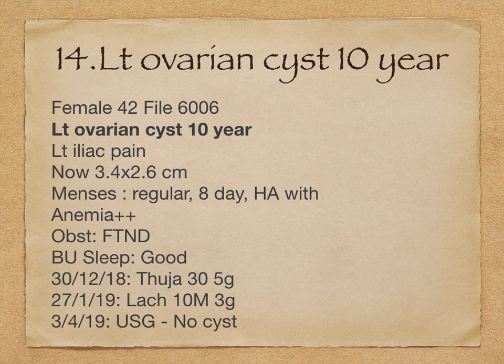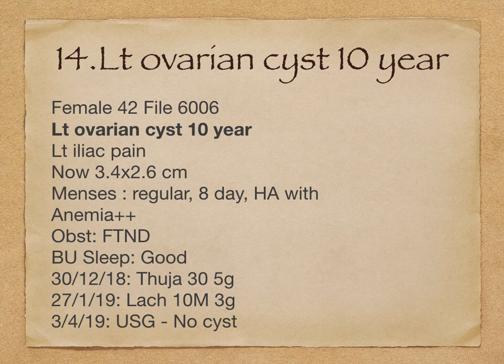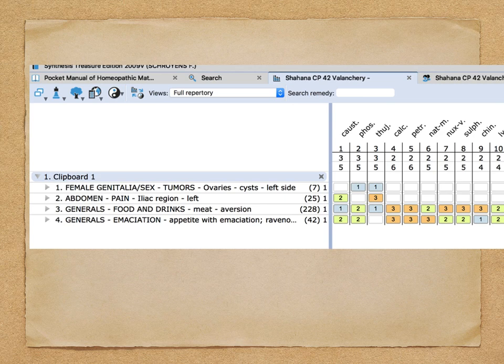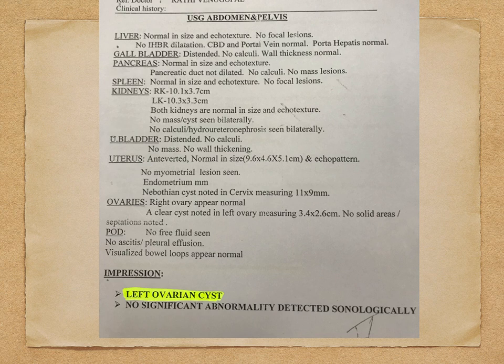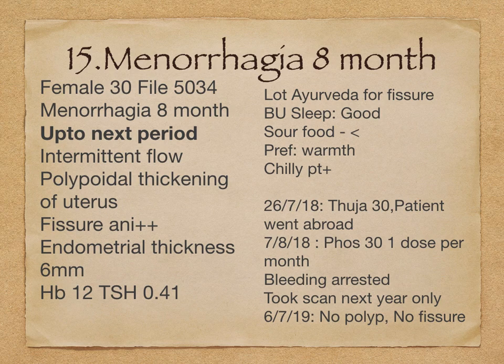Then a case of left ovarian cyst of 10 years duration — the age of the patient is 42. The patient has left iliac pain, the size is 3.4x2.6 cm, menses is regular, headache during menses, the patient is anemic also. We prescribed Thuja 30 initially, then followed by Lachesis 10M as the remedy. The rubrics taken: Tumor, ovarian, cyst, left side; Pain, iliac region, left; Generals, emaciation; Appetite, ravenous. The first scan showed left ovarian cyst, and the second scan showed no significant abnormality detected.